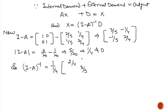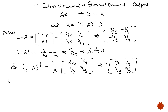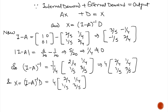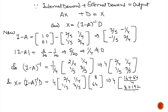The inverse of I minus A is 1 divided by (1/4), multiplied by [2/4, 1/4; 1/5, 3/5]. Now we calculate X. X equals (I minus A) inverse multiplied by D. (I minus A) inverse is 4 times [2/4, 1/4; 1/5, 3/5], multiplied by D which is [8; 64]. After calculation, the value of X equals [X1; X2] = [80; 160].